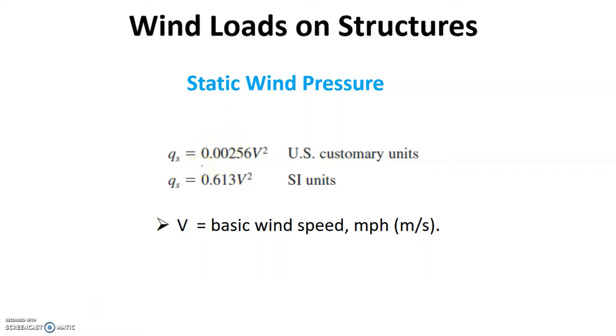This is a quick video to show how to convert wind loads to equivalent static loads on structures. The static wind pressure is calculated by the equation Qs equals 0.00256 V squared, where V is the basic wind speed in miles per hour.